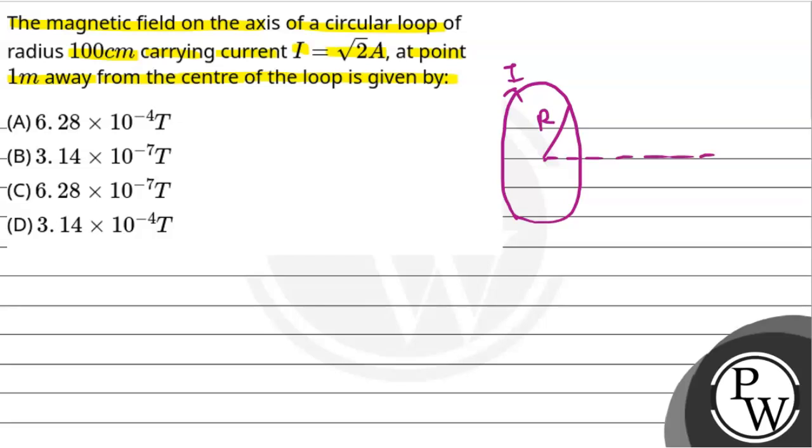At a point 1 meter away from the center of the loop, we have a point P. We need to find the magnetic field at this point. Let's start with the solution.